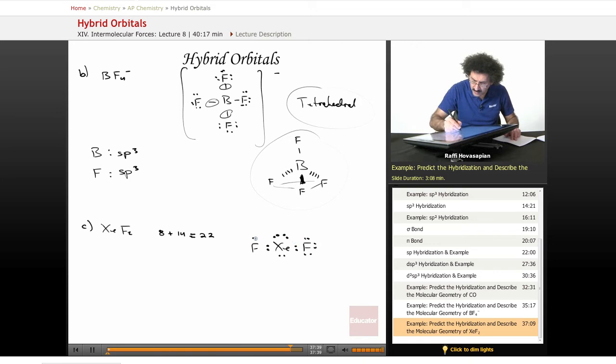And if you do the electron count, I have 2, 4, 6, 8, 10, 12, 14, 16, 18, 20, 22. Yes, so what we have is a Lewis structure that is F-Xe-F with three lone pairs on xenon.